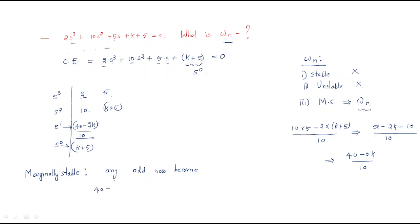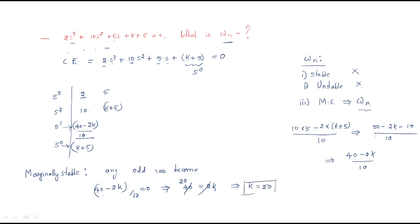Setting the s¹ row to zero: (40 − 2k)/10 = 0, which gives 40 = 2k, therefore k = 20.